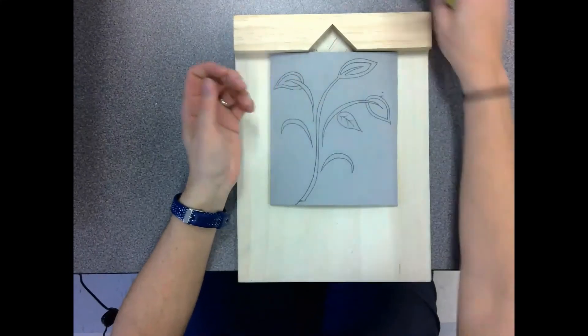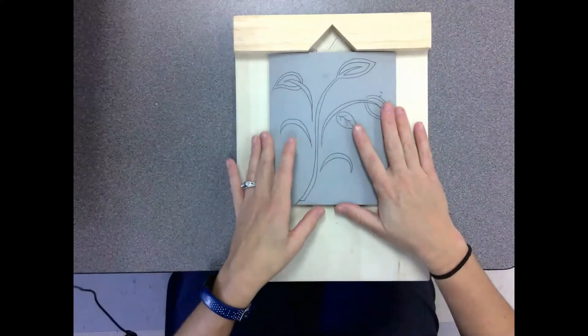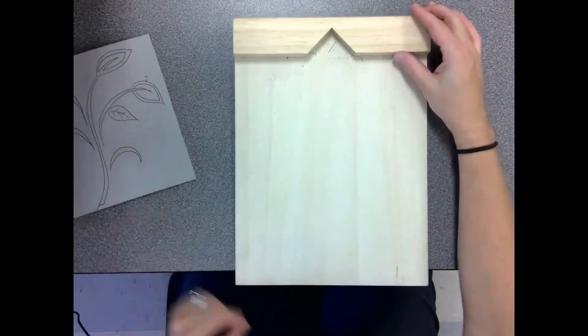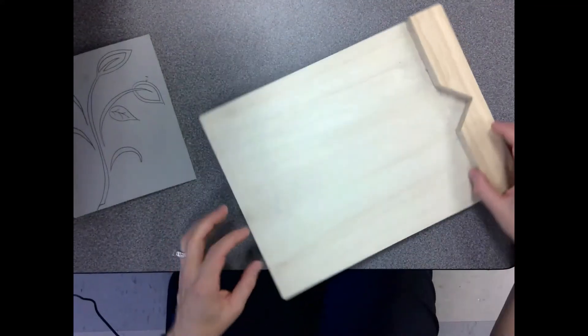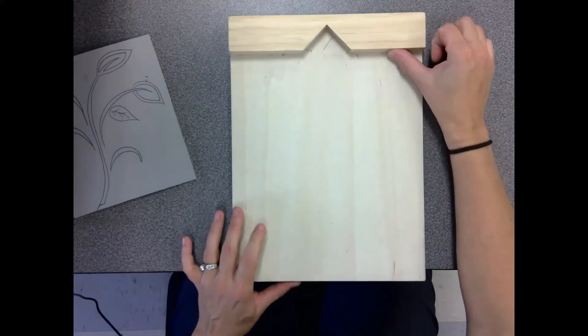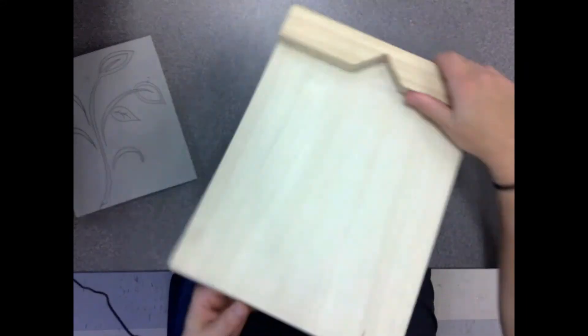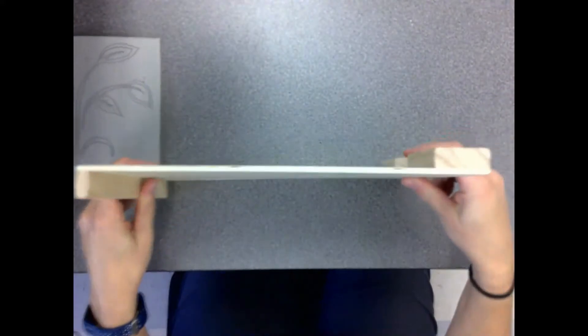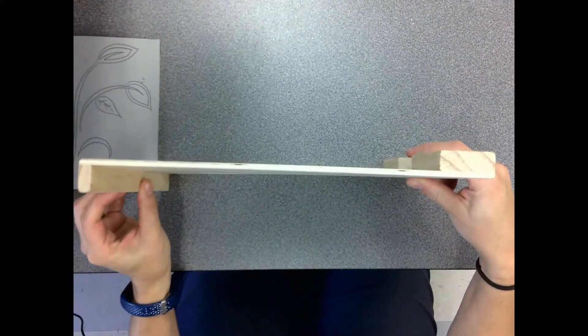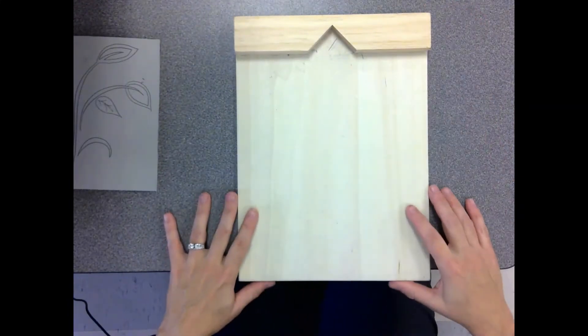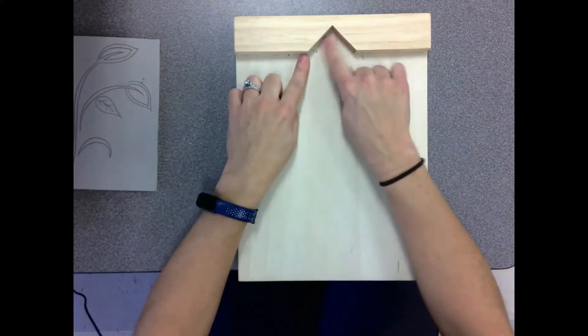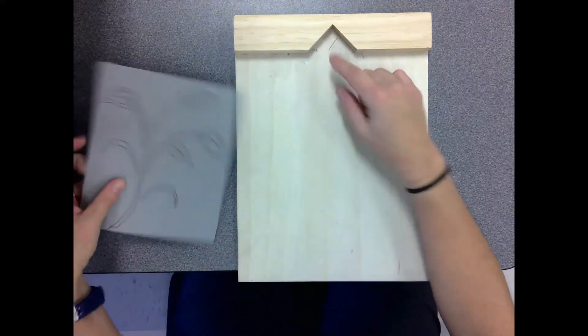Now another thing that I have, this is my plate that I'm getting ready to carve. I also have a bench hook. The bench hook actually will hook onto the edge of the table so it's not going anywhere. It also has a grooved area for whenever you're doing diagonals.